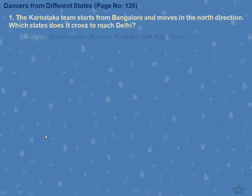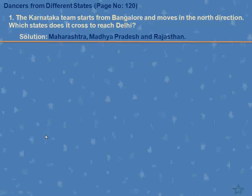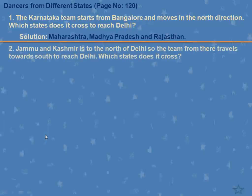So what you will write here: Maharashtra, Madhya Pradesh, and Rajasthan. Next question: Jammu and Kashmir is to the north of Delhi, so the team from there travels towards the south to reach Delhi. Which states does it cross?